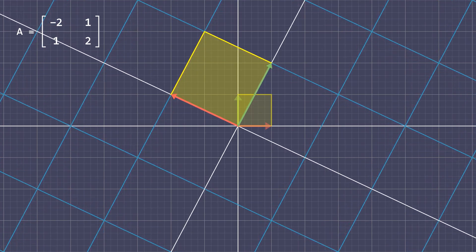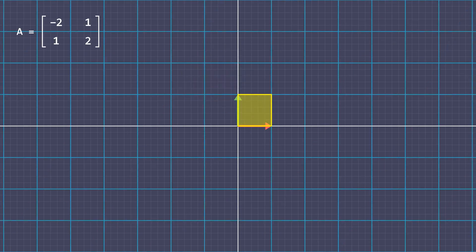Whenever this happens, whenever the orientation of the space is inverted the determinant will be negative. The absolute value of the determinant though still tells you the factor by which the areas have been scaled. Let us see a few more examples.